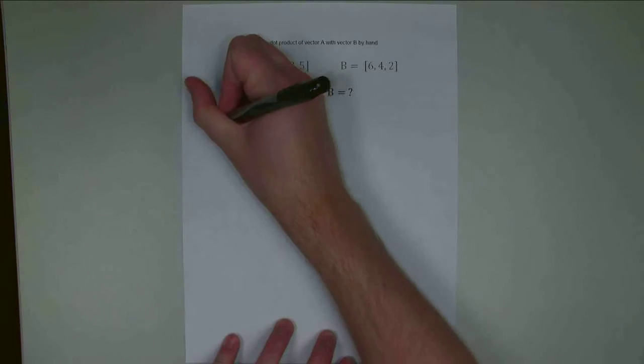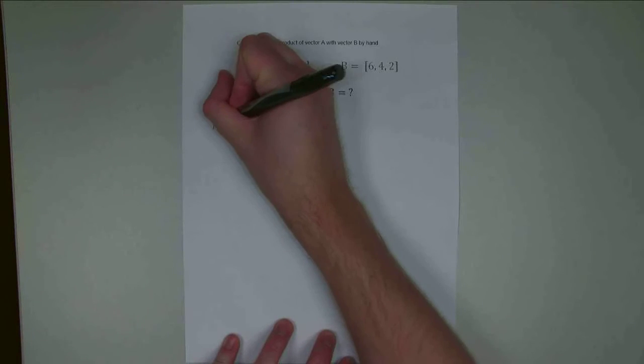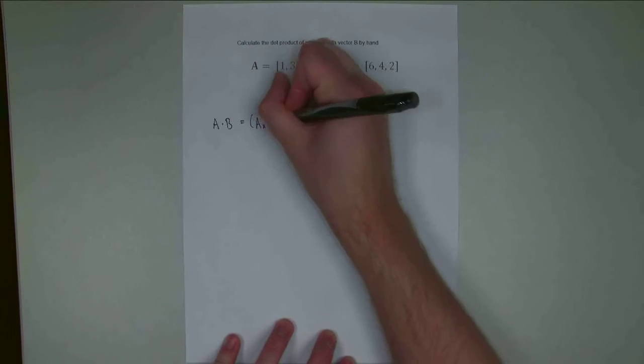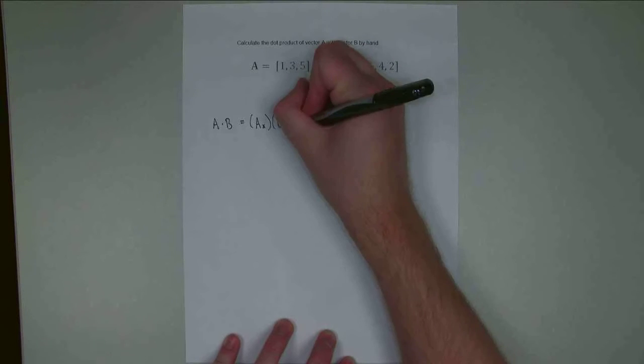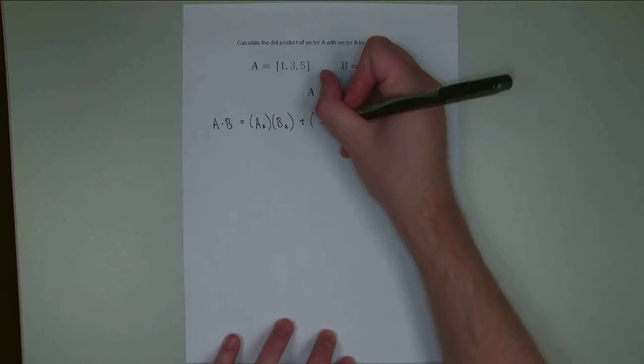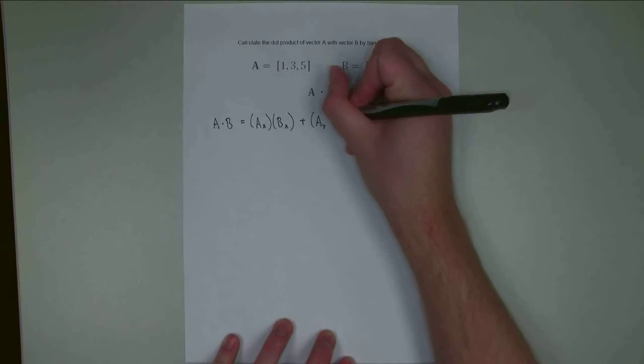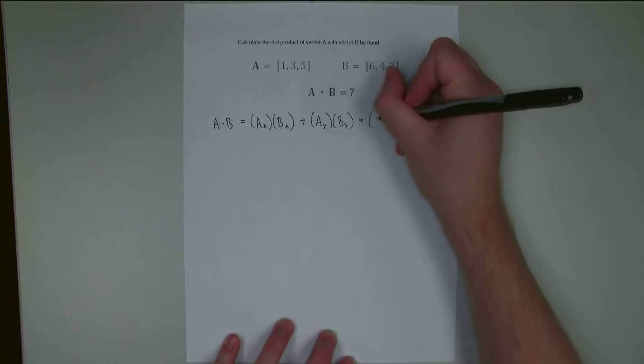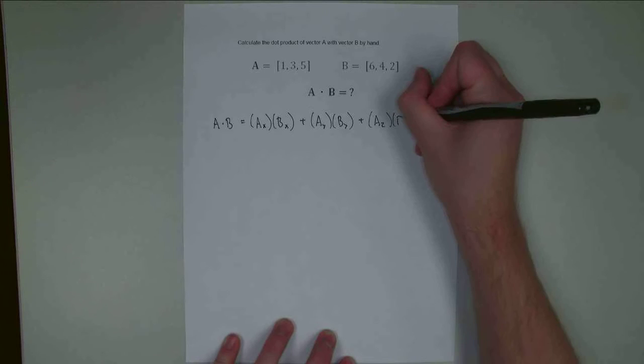So for this, we're going to use the calculation A dot B is going to be equal to the X component of A times the X component of B plus the Y component of A times the Y component of B plus the Z component of A times the Z component of B.